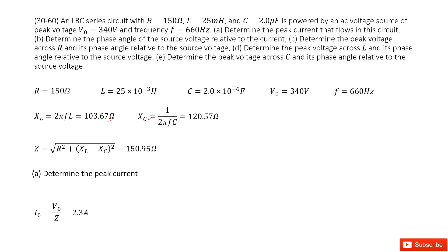Similarly, we can get the capacitive reactance as X_C = 1/(2πFC). Next, we can get the impedance — the total resistance the current encounters going through this RLC circuit. We write it as Z = √(R² + (X_L - X_C)²). So now we have the inductance reactance, capacitive reactance, and impedance prepared.